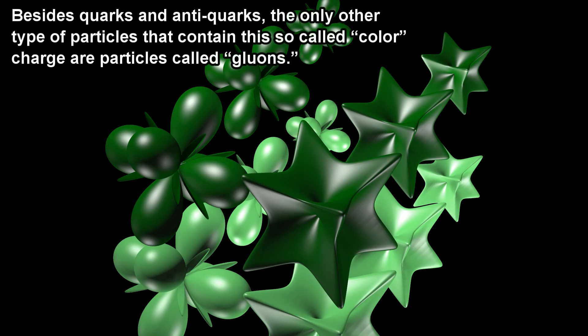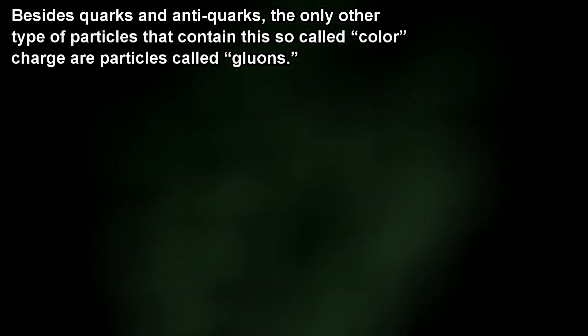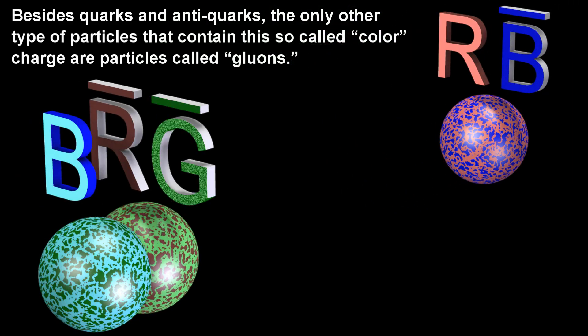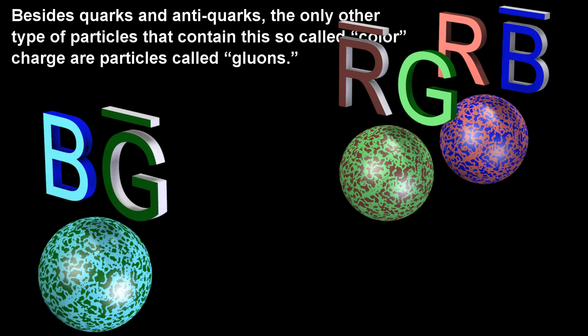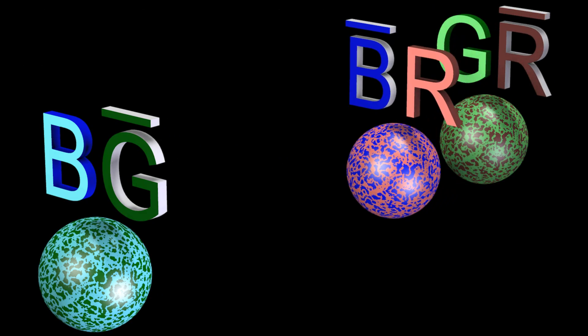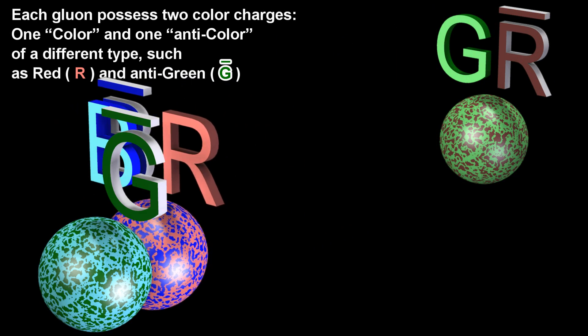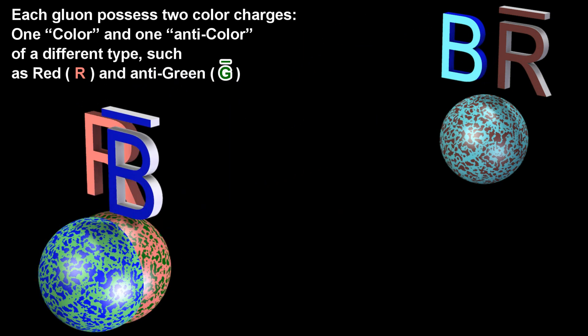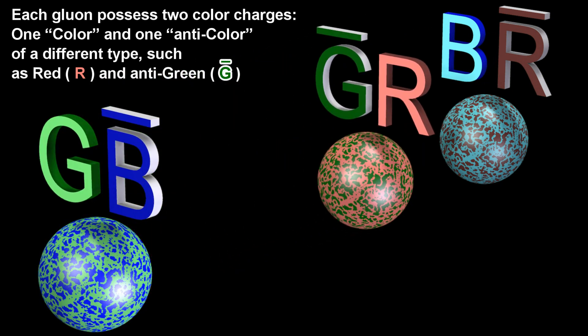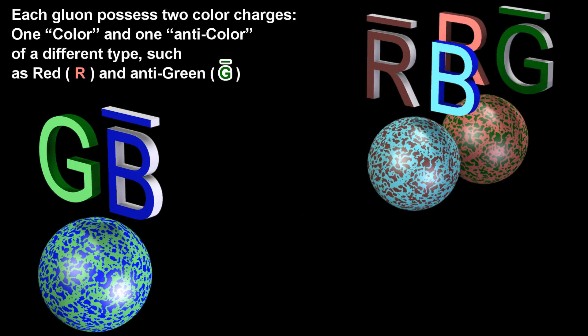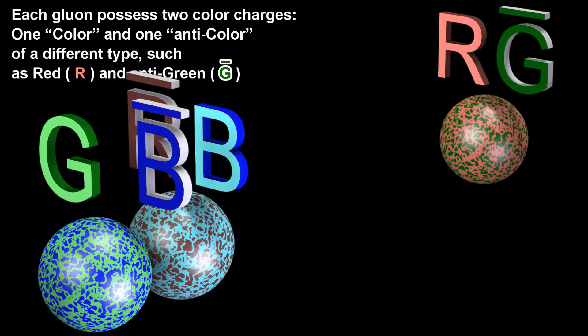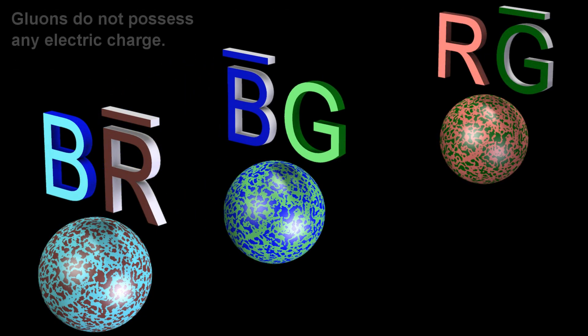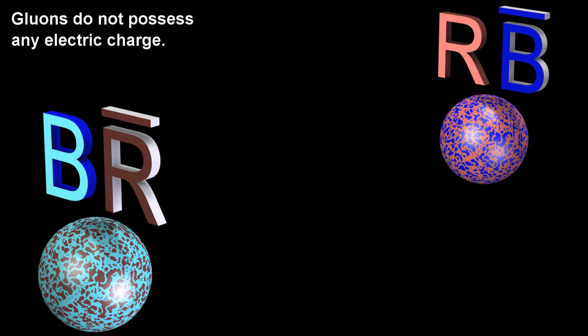Besides quarks and anti-quarks, the only other type of particles that contain this so-called color charge are particles called gluons. Each gluon possesses two color charges, one color and one anti-color of a different type, such as red and anti-green. Gluons do not possess any electric charge.